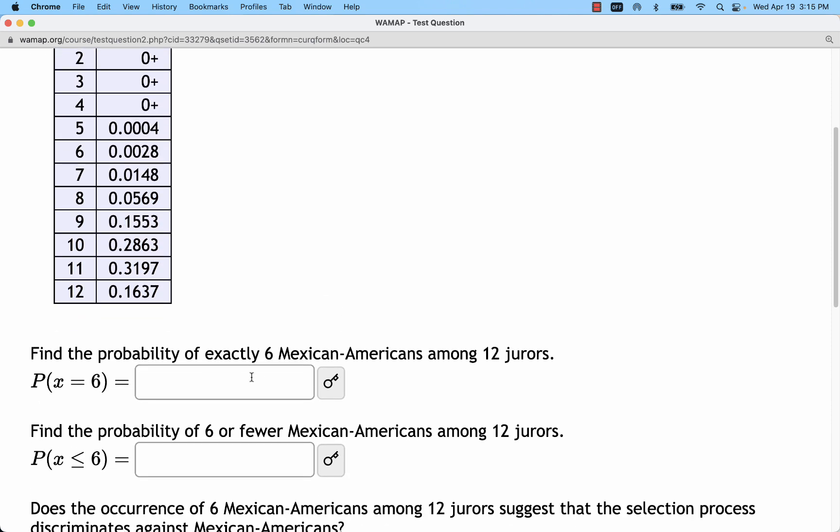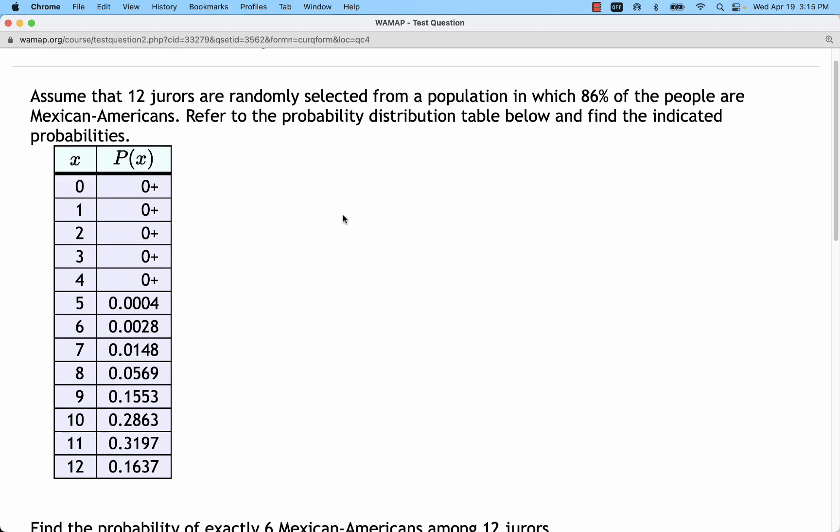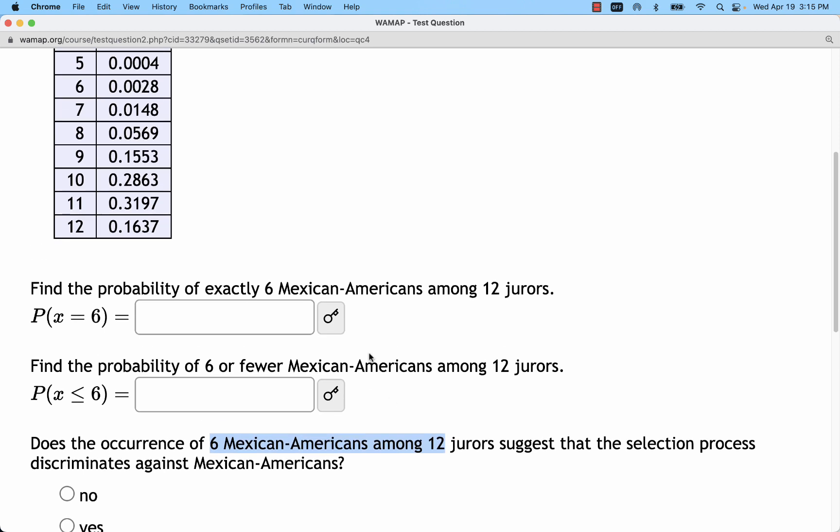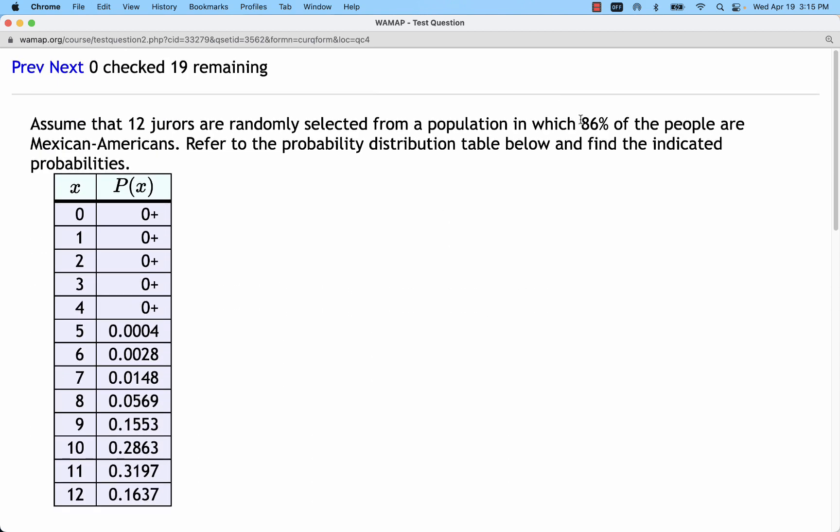Now looking at the problem, in this specific jury, they must have had 6 out of the 12. So they had 50% of that jury. And already we'd say that's pretty low if we really should be at 86% on average.